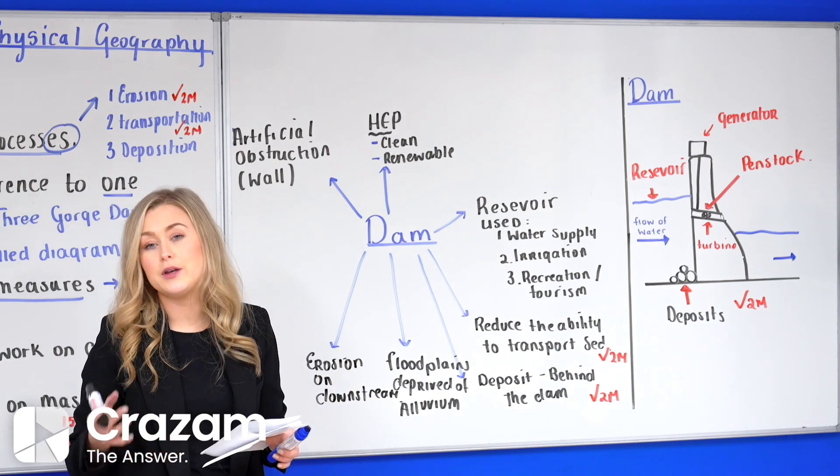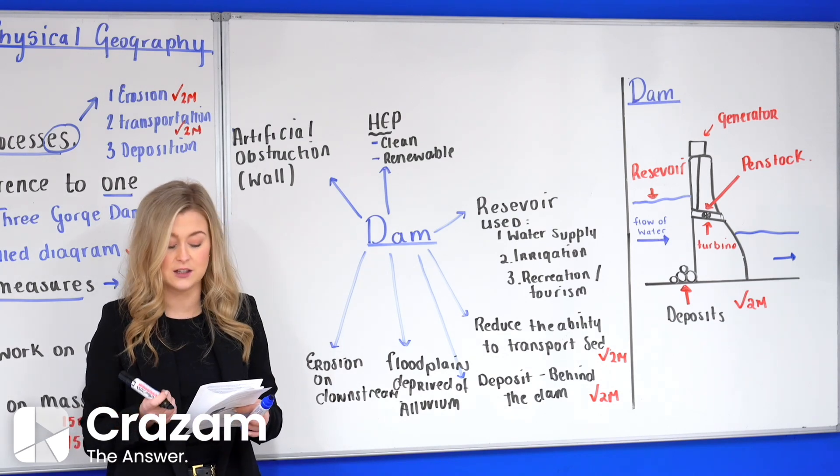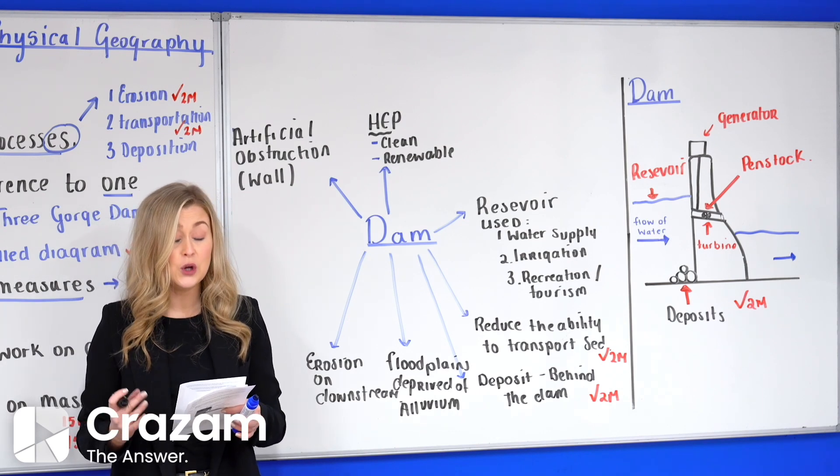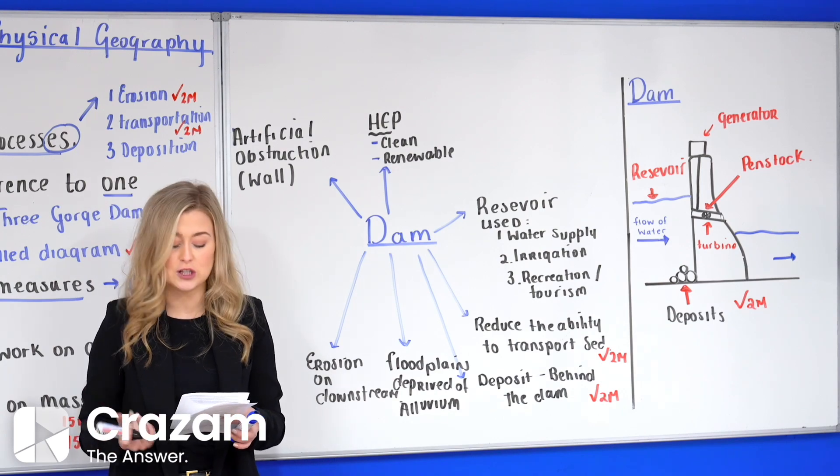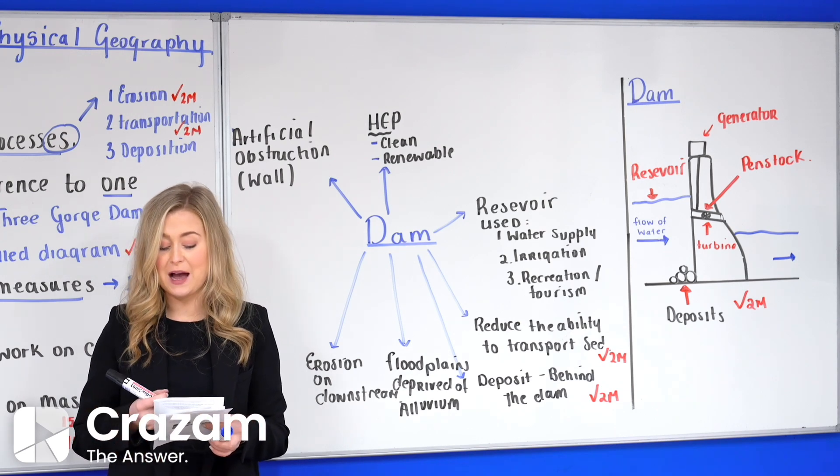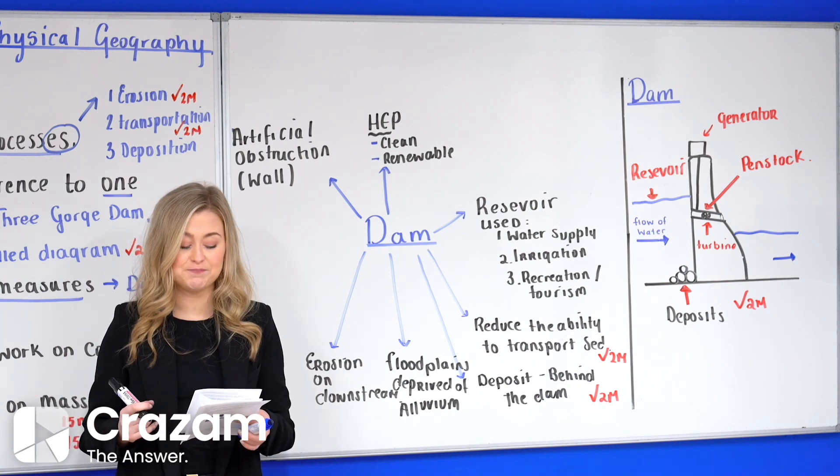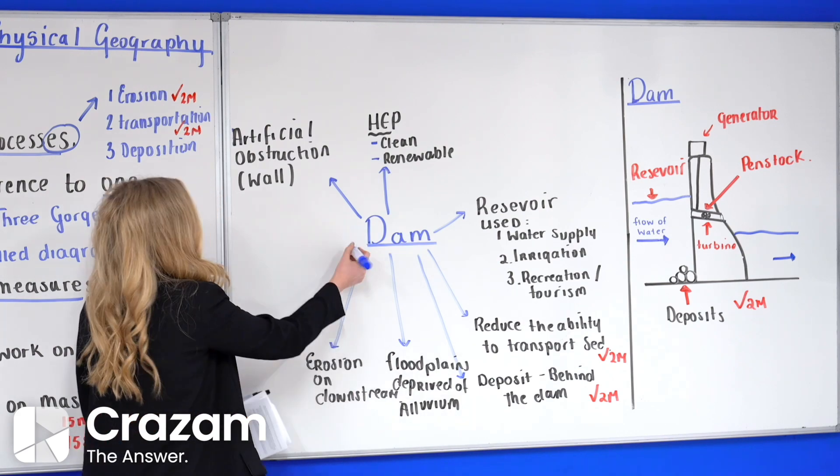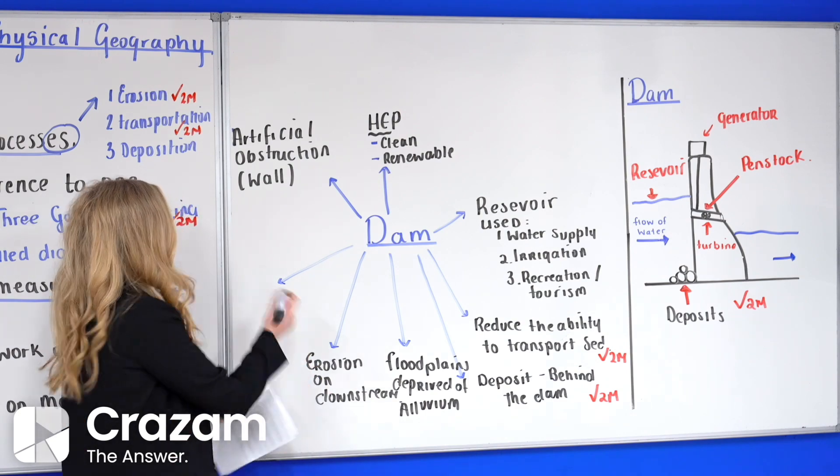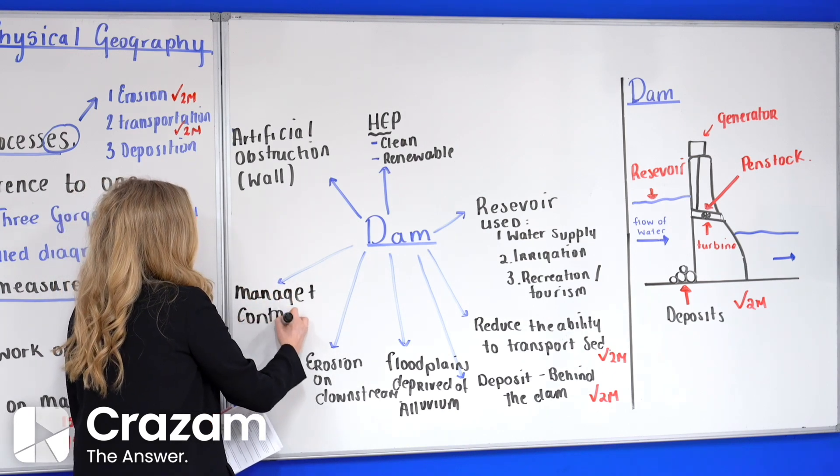Finally, dams allow humans to manage and control rivers allowing the flow of water to be regulated depending on the demand. Flood prevention is a key function of dams and during periods of heavy rainfall when the water table rises and the lakes or rivers swell, at these times the openings in dams are enlarged to allow more water to pass through to ensure the riverbanks do not burst upstream on the upstream side. What we're going to say here is dams are used to manage and control rivers.